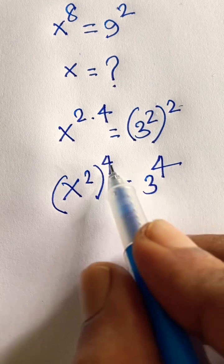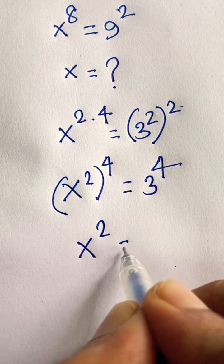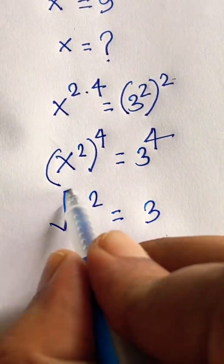So both are equal, so the bases are equal according to exponential rules. x to the power 2 equals 3. Then if I use square root on both sides, we find out